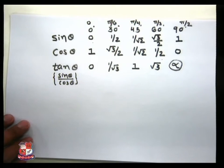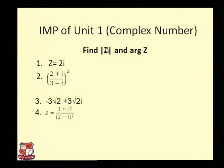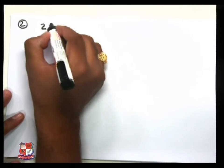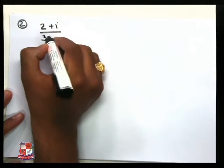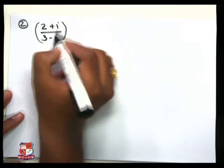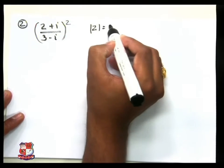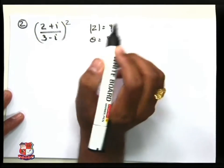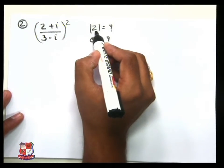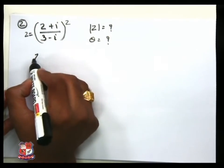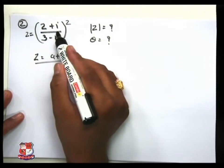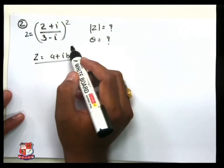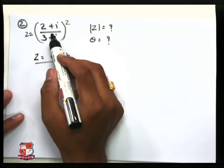We move to our next question: find the modulus and argument of z = (2 + i) / (3 − i)². To find the modulus and angle, we must first convert z into a + ib form. This involves division of complex numbers, which we already discussed in a previous session.